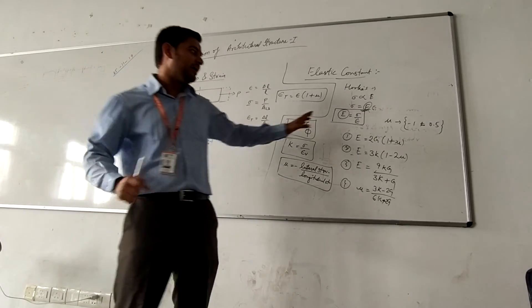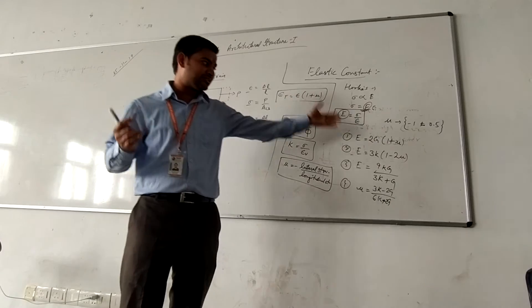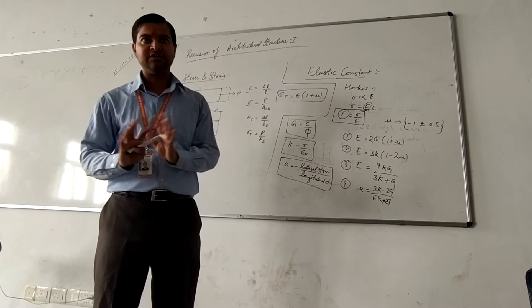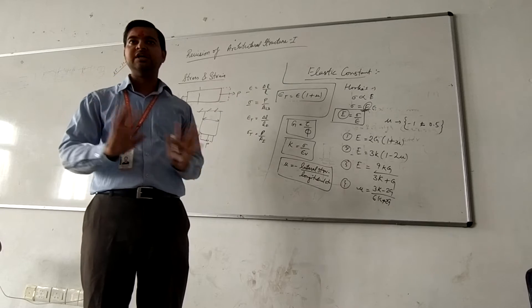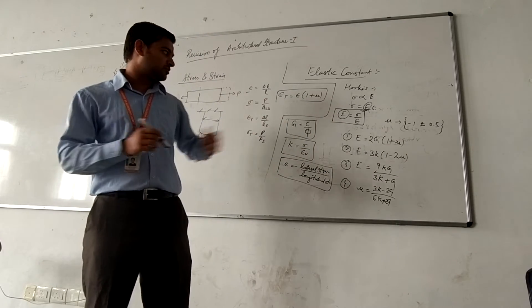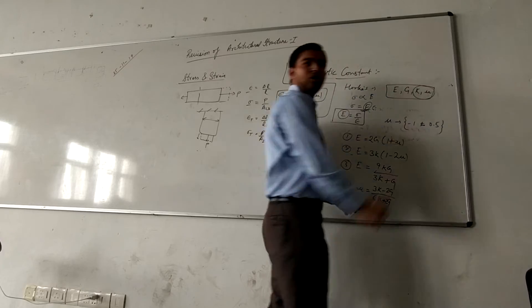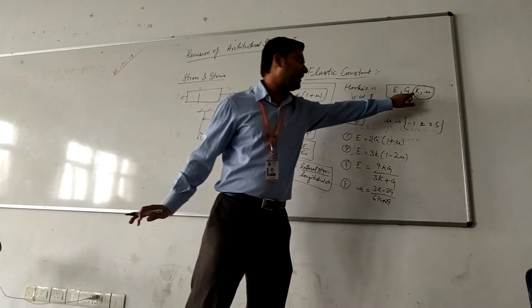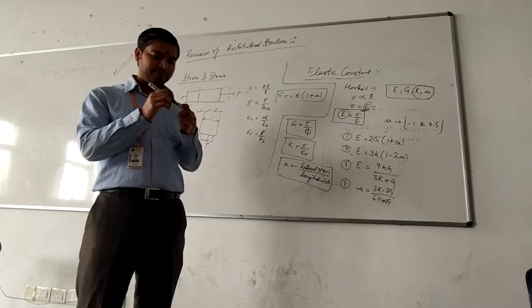This is the basic idea about elastic constants. In exams you may be asked for the relationship between modulus of elasticity and modulus of rigidity, or between modulus of elasticity and bulk modulus. You can derive it or just remember and define what E and G are — that will be sufficient. We use elastic constants to characterize a material. We have four constants: E, G, K, and mu. If we know any two of them, we can find the other two — only two are independent constants.